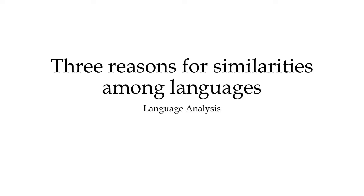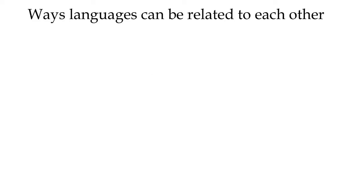In this module, I'll talk about three main reasons that we see similarities among languages. One of the reasons we think of certain languages as hard or certain languages as easy is because they may be similar to a language I already know. So we'll talk a little bit about how those similarities maybe came into existence. There are three main ways that historical linguists talk about why languages are related to each other.